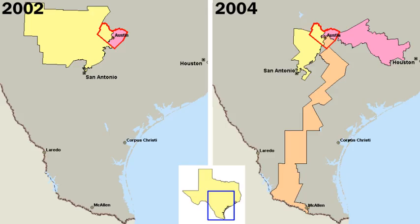Reasons for this American exceptionalism included: suffrage was the most widespread in the world, with every man who owned a certain amount of property allowed to vote. While fewer than 20% of British men could vote, a majority of white American men were eligible. While the roots of democracy were apparent, nevertheless deference was typically shown to social elites in colonial elections. That deference declined sharply with the American Revolution.